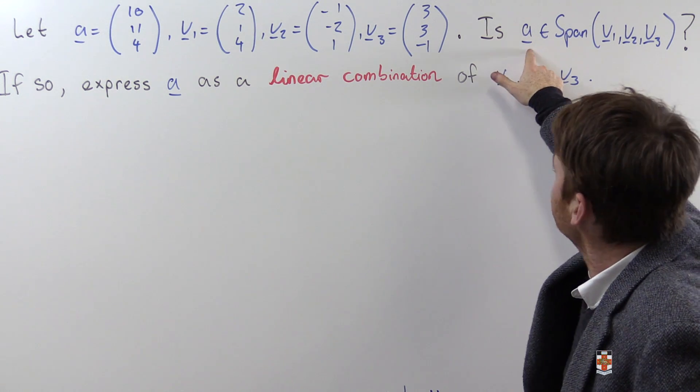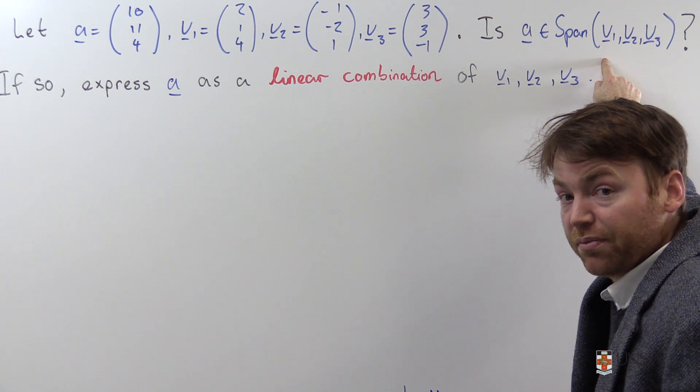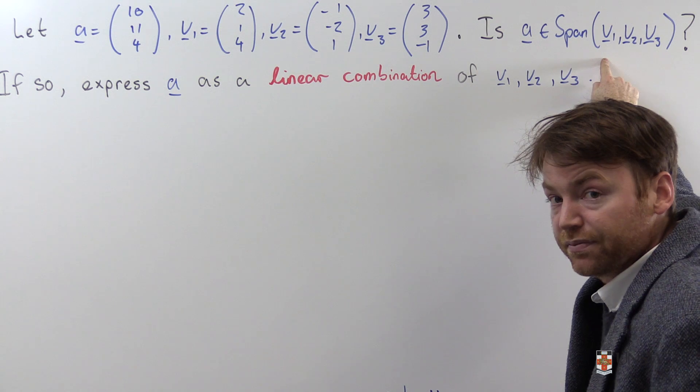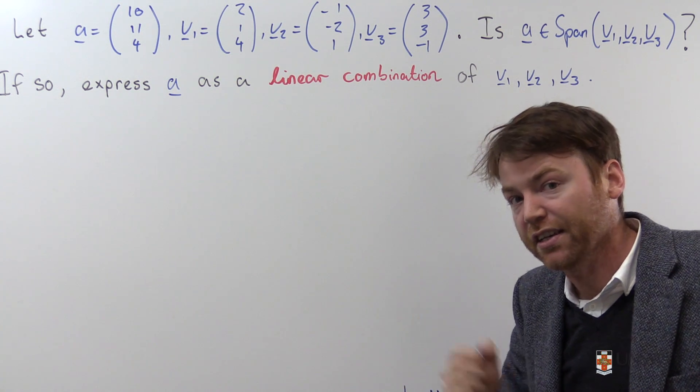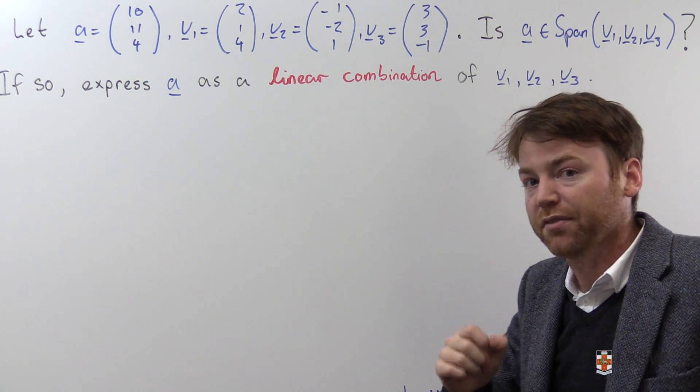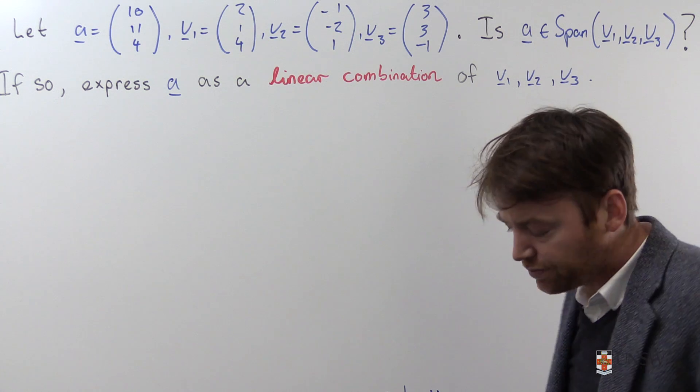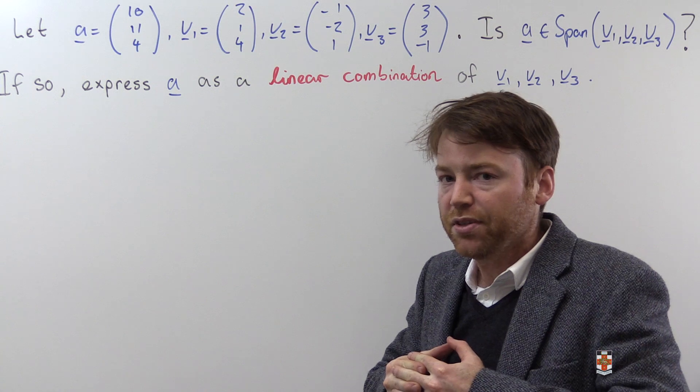We want to know is a particular vector expressible as a linear combination of v1, v2, v3? And if so, find that expression of the vector a as a linear combination of vectors v1, v2 and v3.